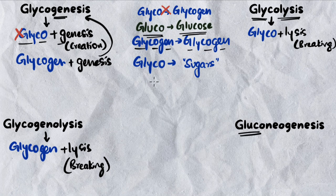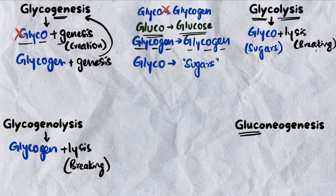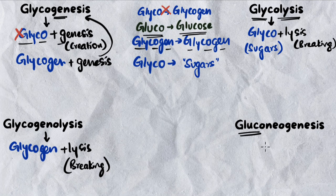So we have three things: 'gluco' stands specifically for the glucose sugar; 'glyco' comes from the Greek word meaning sugars in general, any isomer of glucose; and 'glycogen' will always specifically be referred to as glycogen. With that in mind, glycolysis means breaking of sugars. That makes sense because glucose is a sugar, but breaking down fructose is also glycolysis — when you're breaking down sugars to get energy, we call that glycolysis.